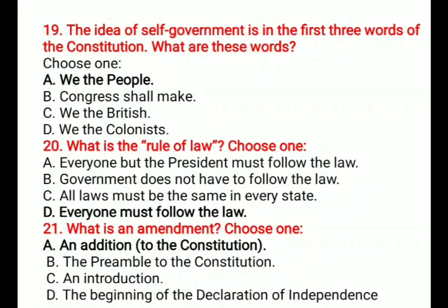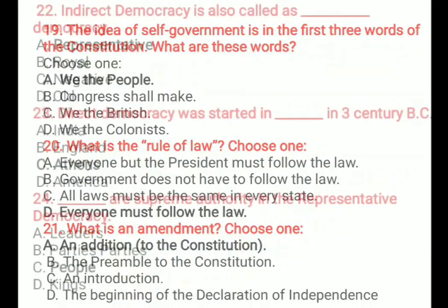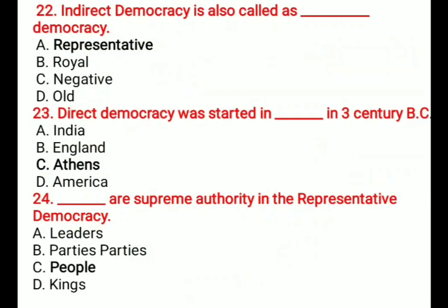Question 21: What is an amendment? Options are: A) An addition to the constitution, B) The preamble to the constitution, C) An introduction, D) The beginning of the Declaration of Independence. The correct option is A, an addition to the constitution.